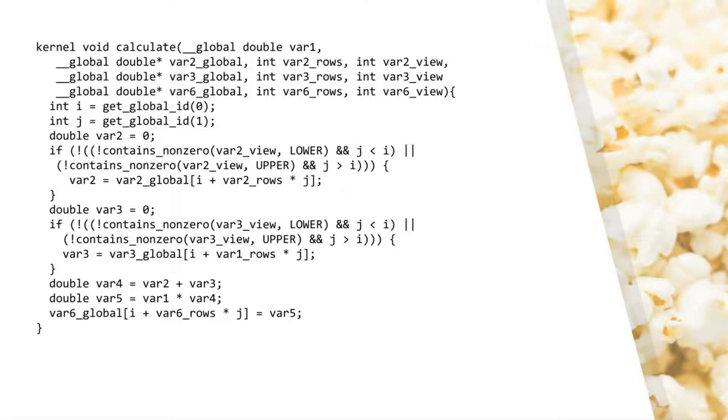On this slide, it's generated kernel code from the previous example. Var1 is the scalar, and var2 and var3 are values from the input matrices. Var2 and var3 are first loaded from the global memory. The ifs around those are required to handle any triangular input matrices.